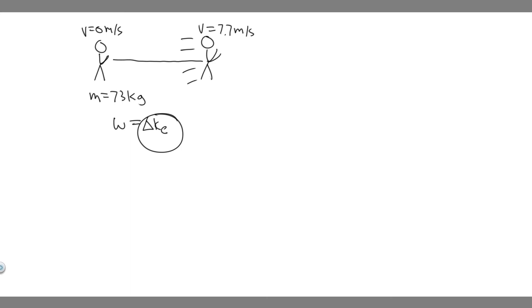So how do we find the change in kinetic energy? First you need to know what kinetic energy is, or the formula for it, which is 1/2 mv². This is the formula for kinetic energy, and if we want to find the change in it, we need to find the final kinetic energy minus the initial kinetic energy.